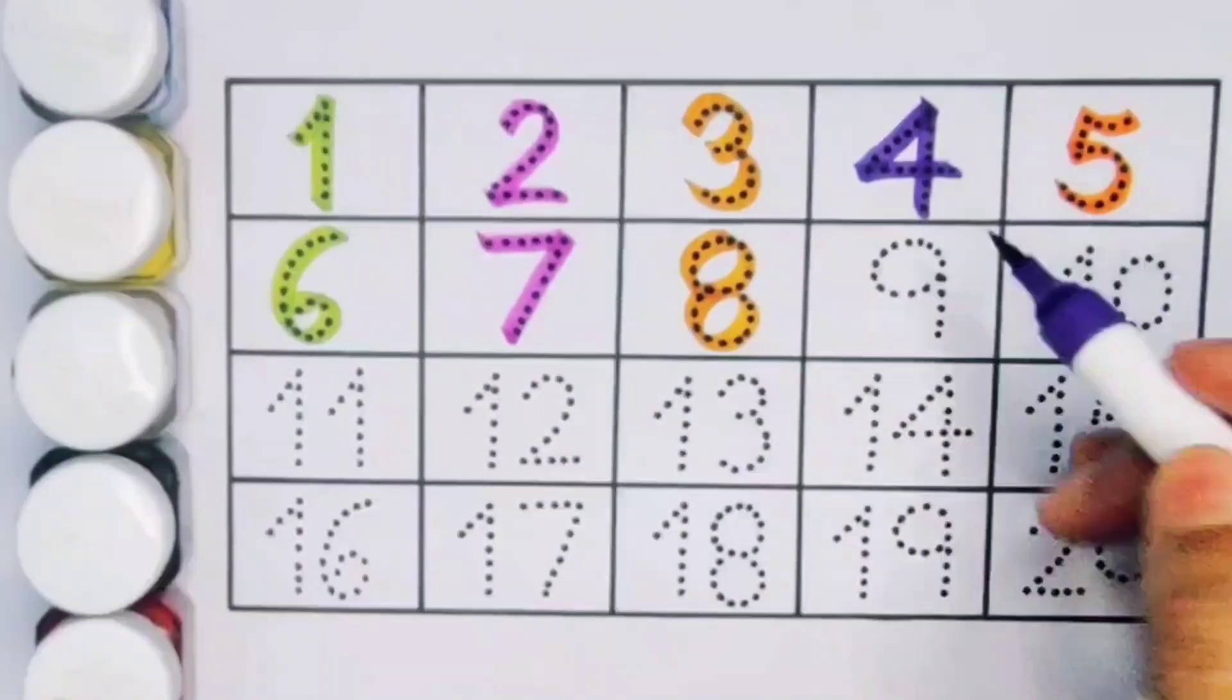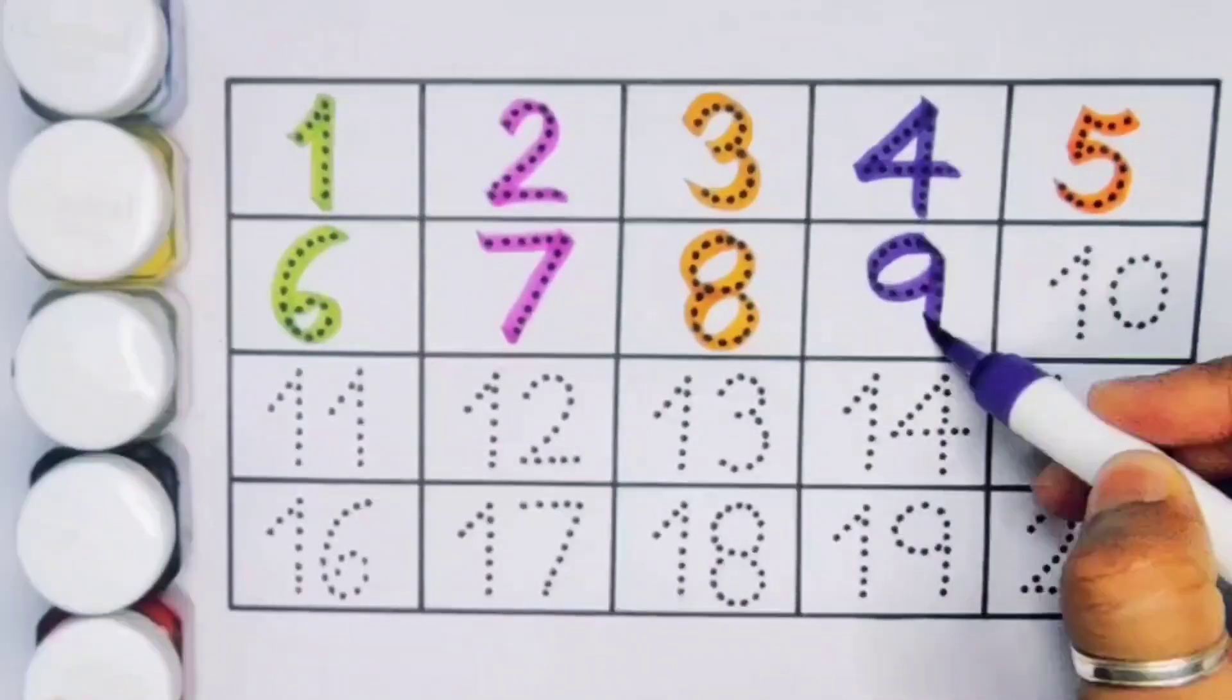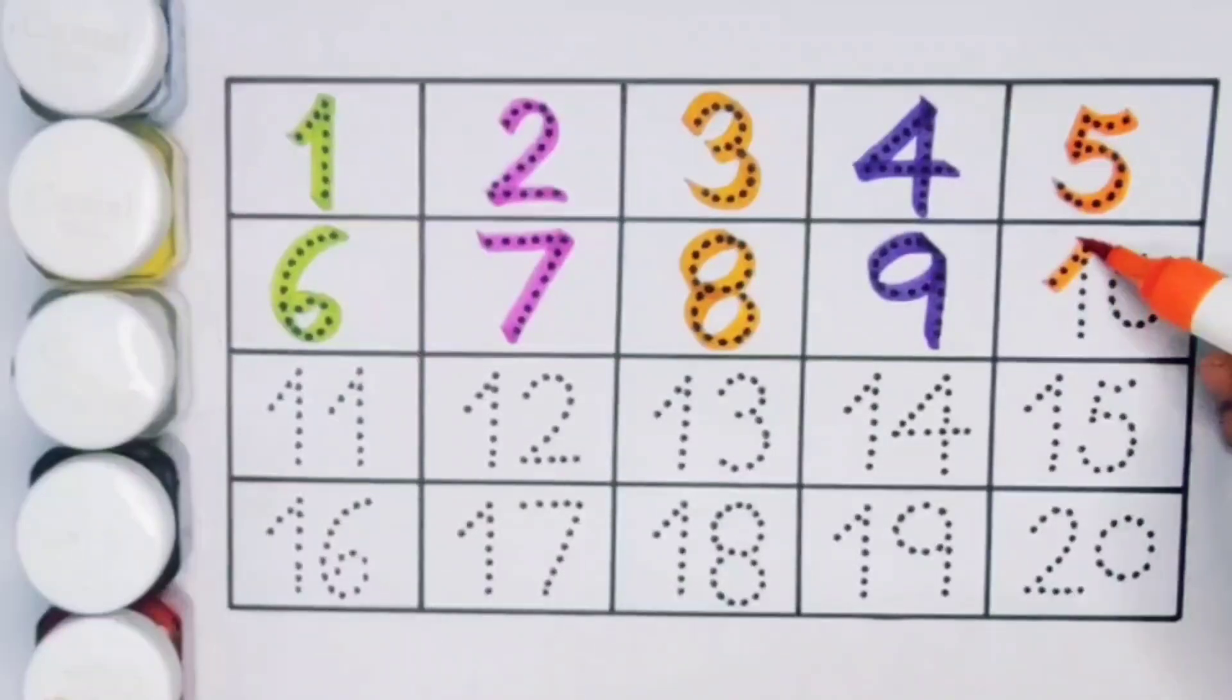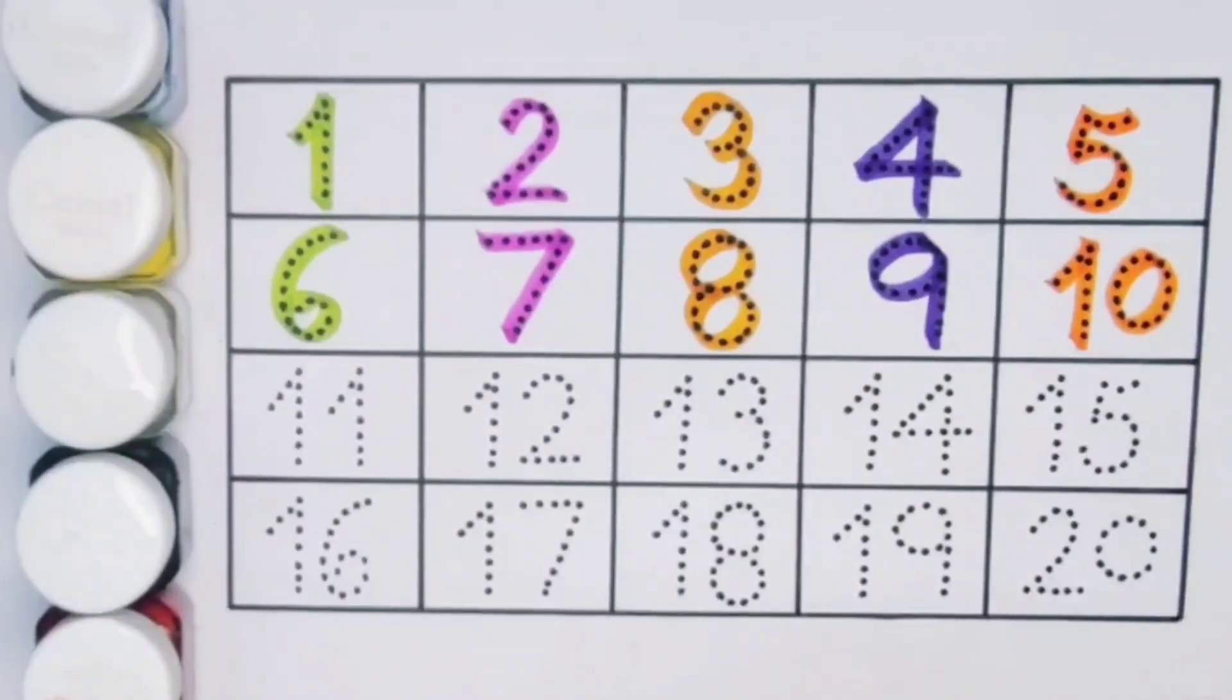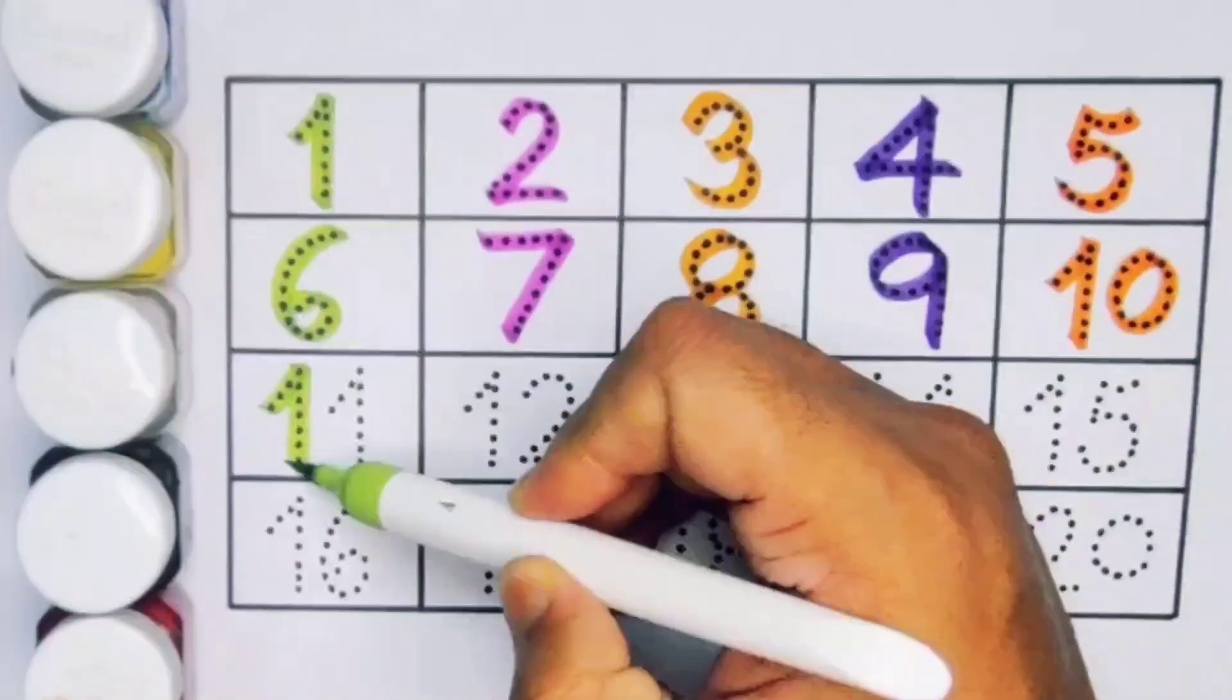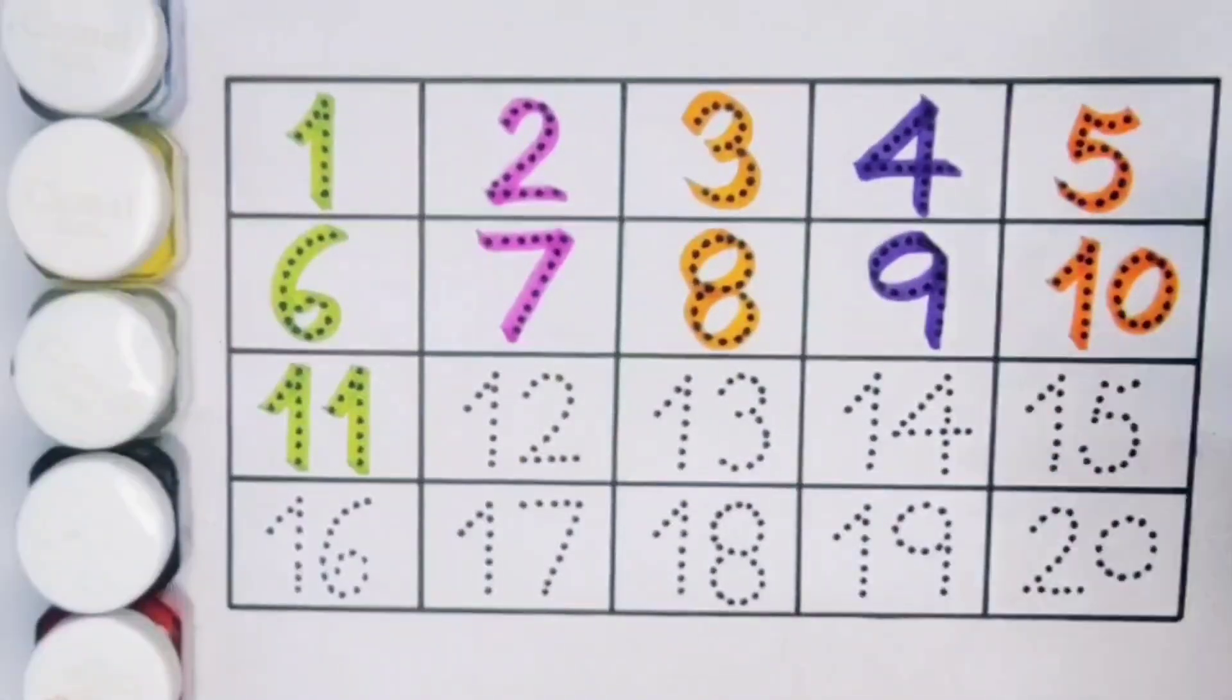Next kids, nine, number nine. Next kids, ten, one zero ten, number ten. Next kids, eleven, one one eleven, number eleven.